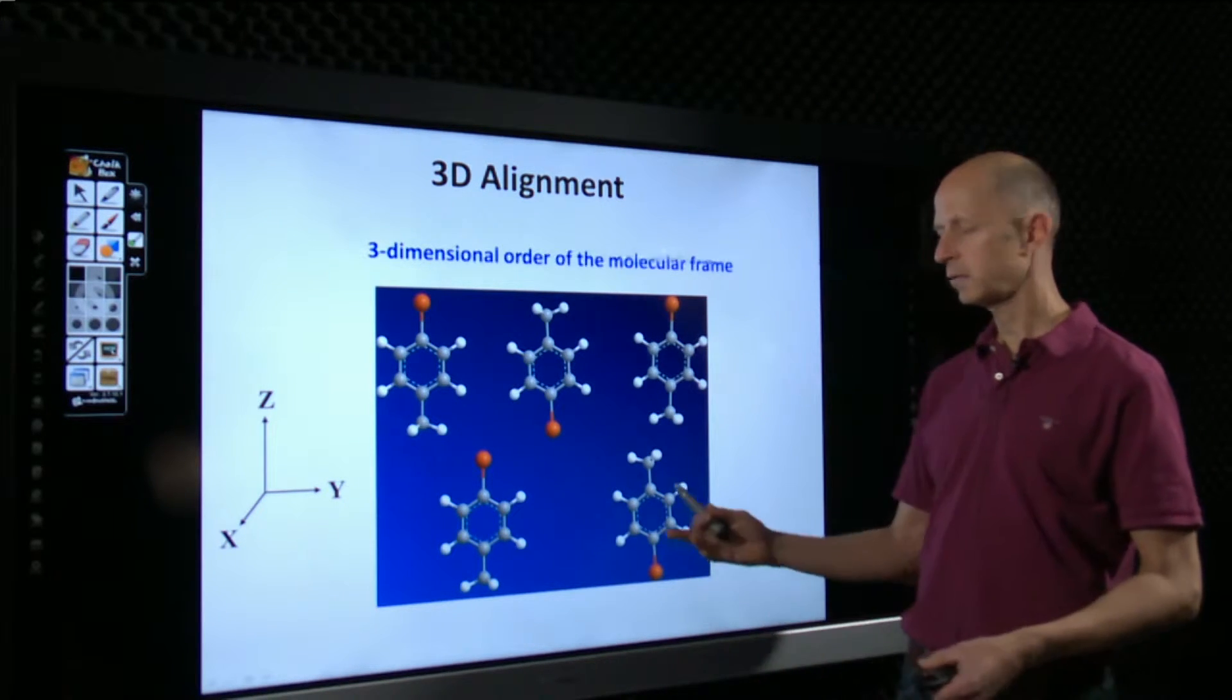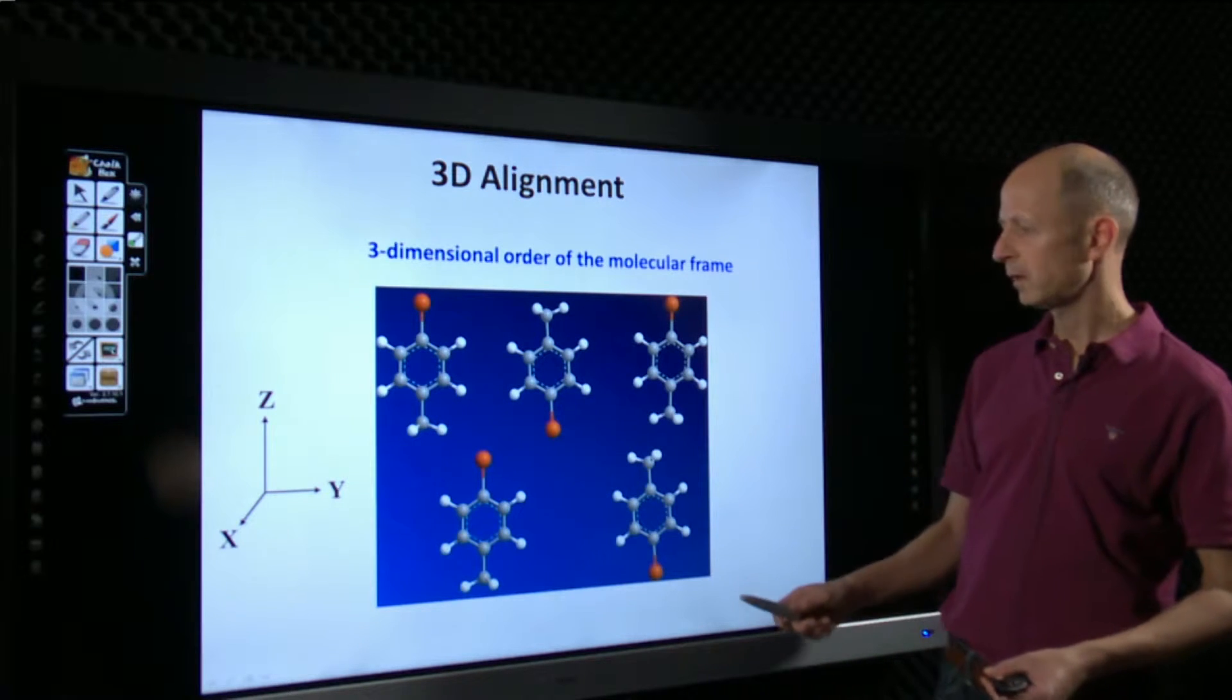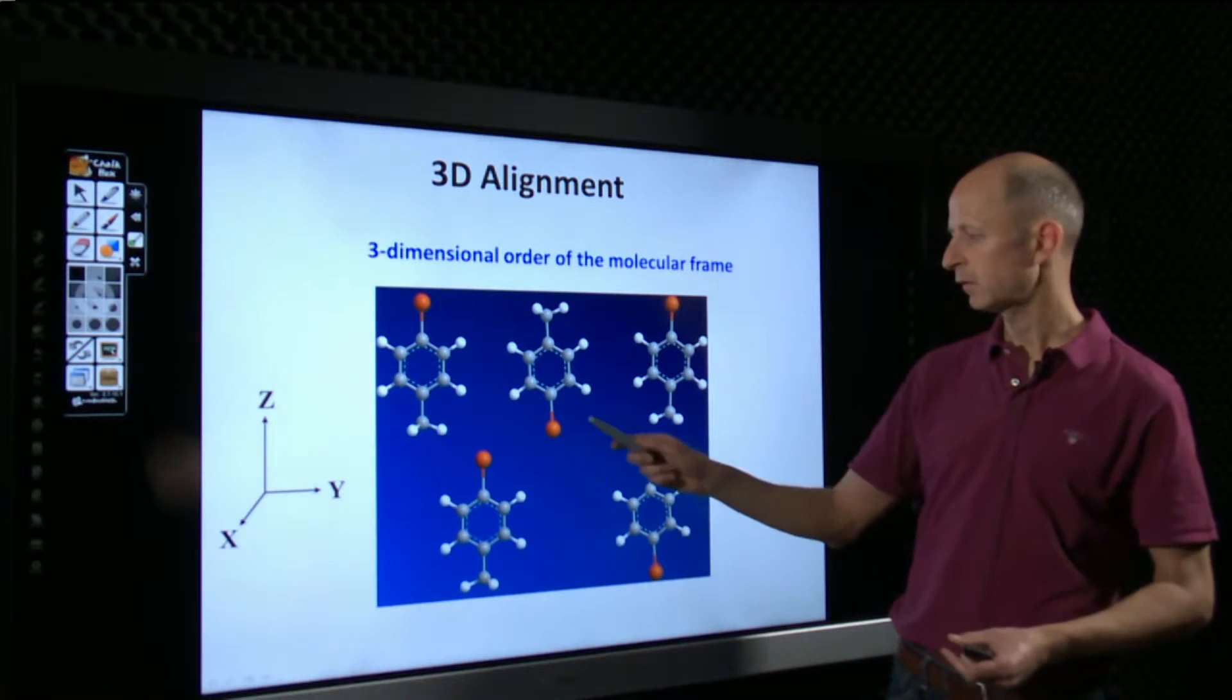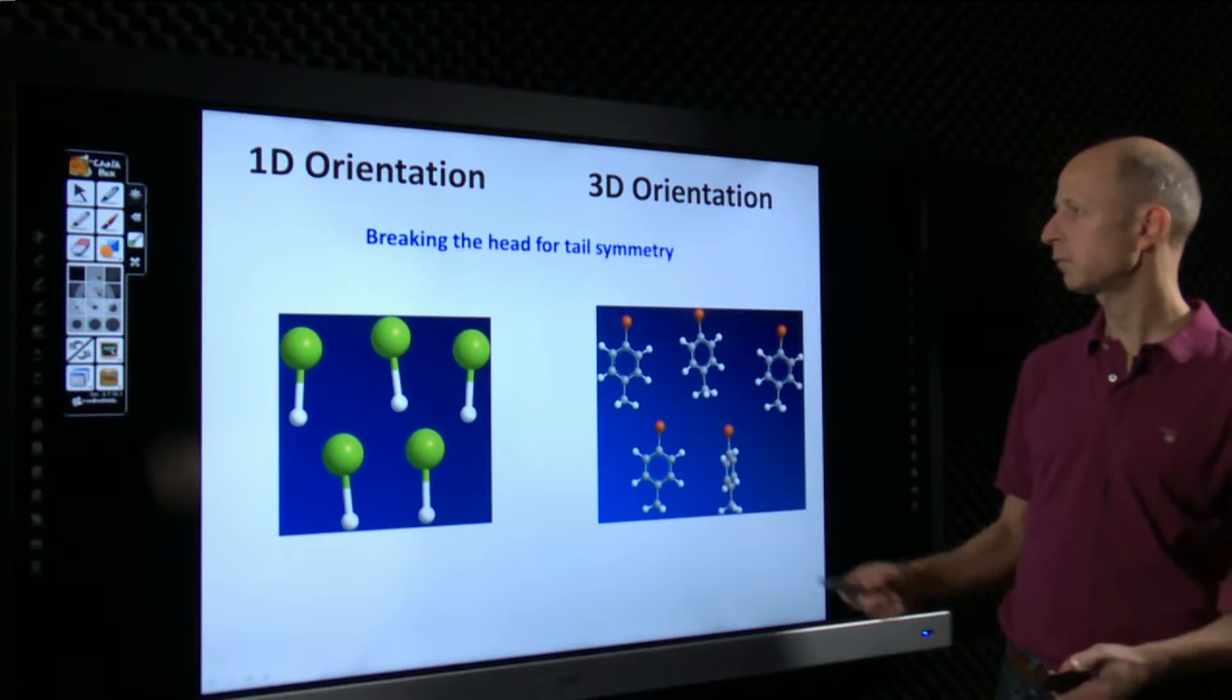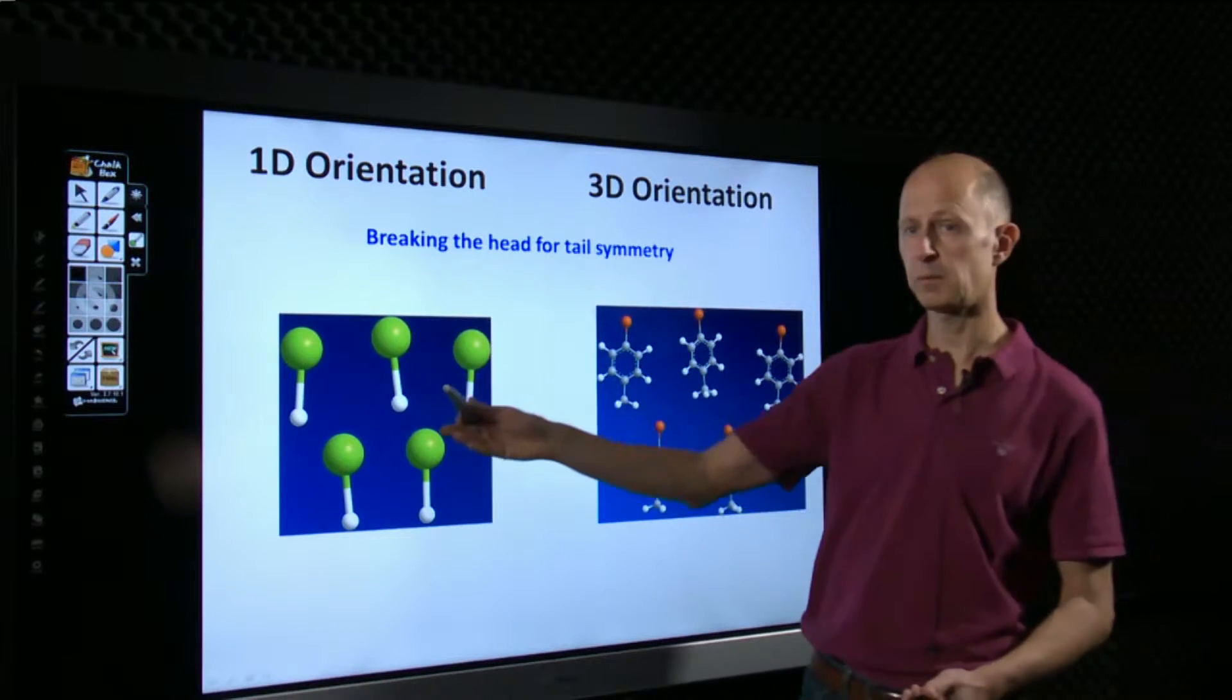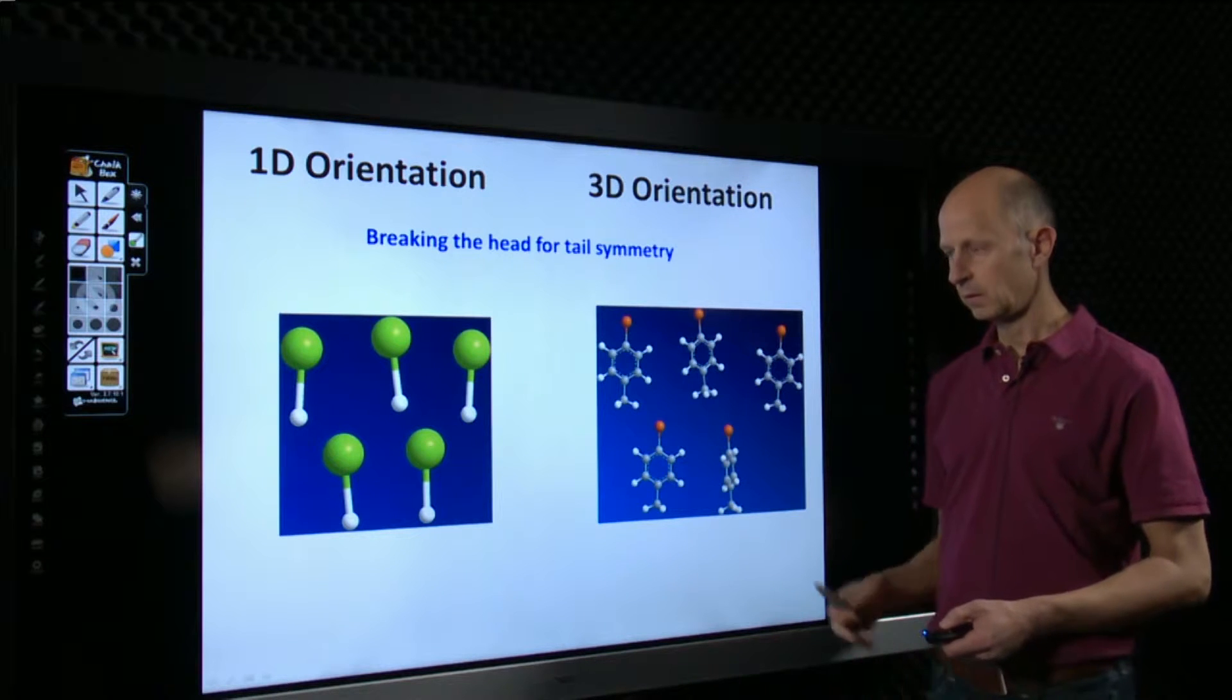Yet, even with 3D alignment, this is not quite sufficient to control molecules that are polar. Polar means that there's a permanent dipole moment in each molecule. And ideally, for such molecules, you'd also like to have dipole moments all pointing in the same direction. So, have all the red noses pointing, for instance, upwards. And if this can be achieved, then we call it orientation. In this case, we could have both three-dimensional alignment and orientation, or we could have one-dimensional alignment and orientation. So, we'd really break the head-for-tail symmetry of the molecule at the same time.